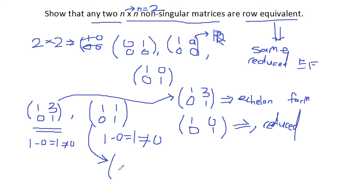We get (1,0; 0,1). We add minus one times row two to row one. Minus one times one is minus one, minus one plus one equals zero. This is in reduced form.